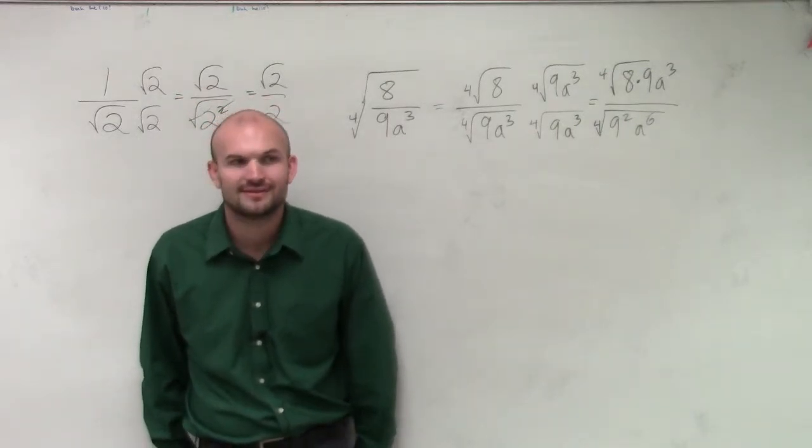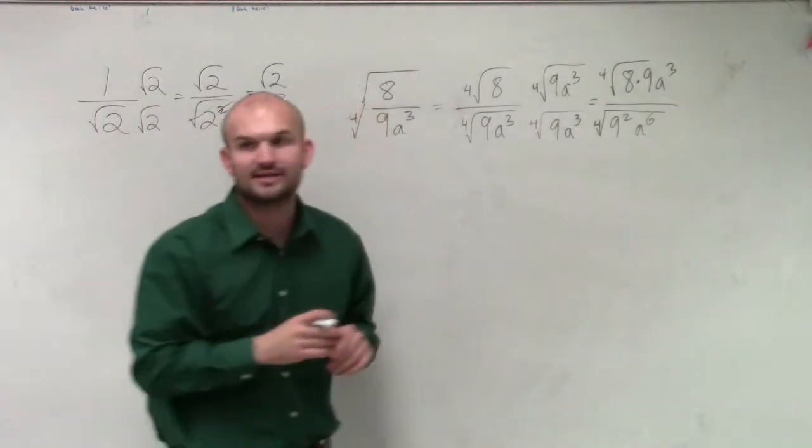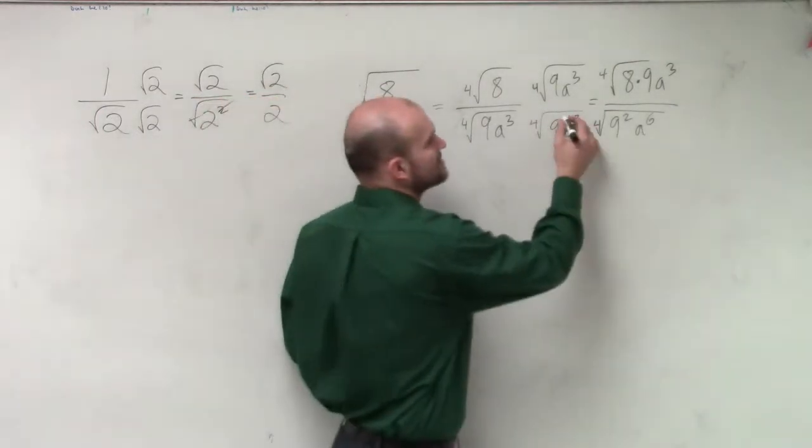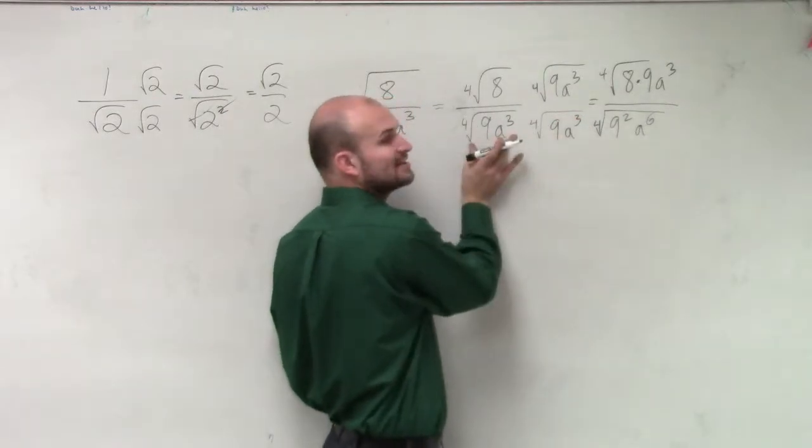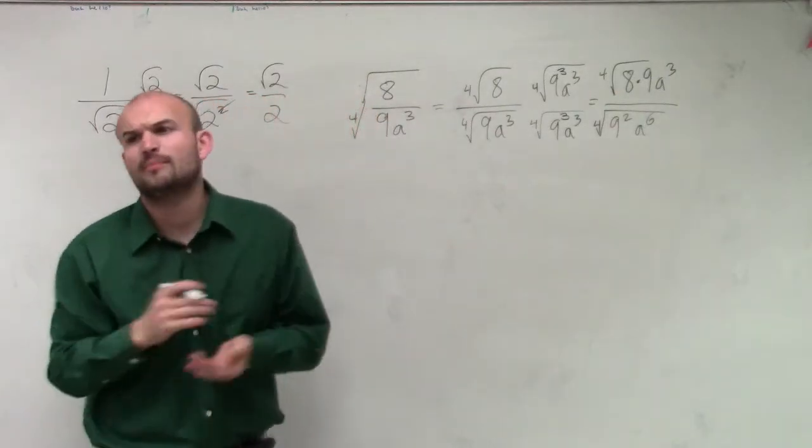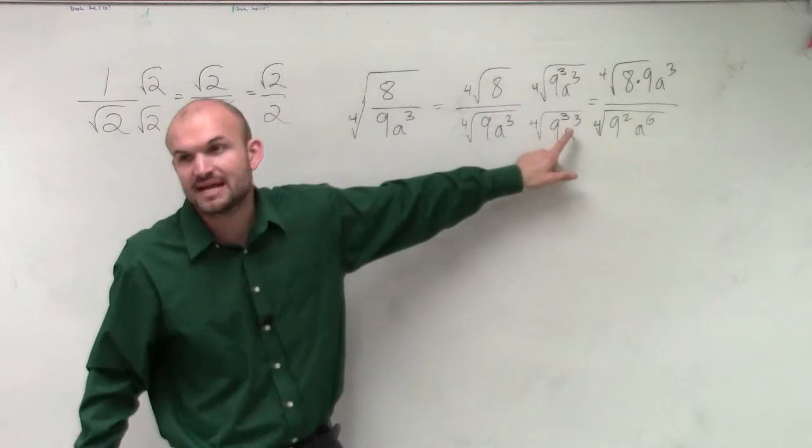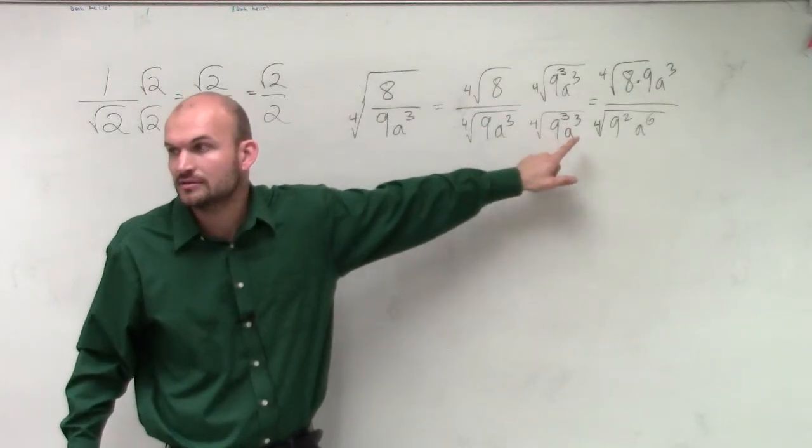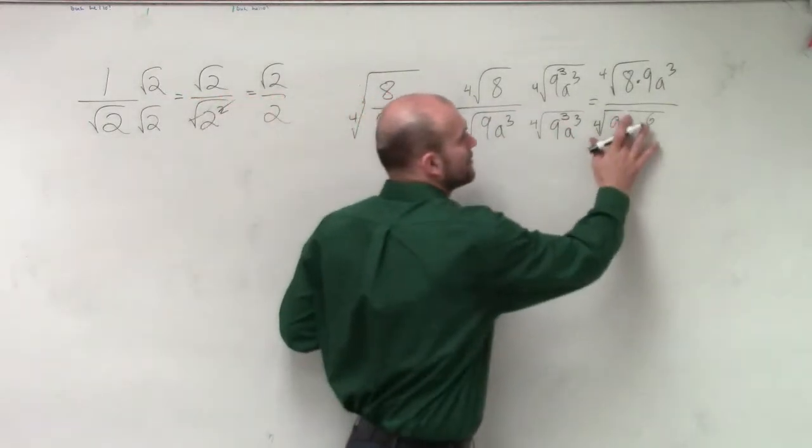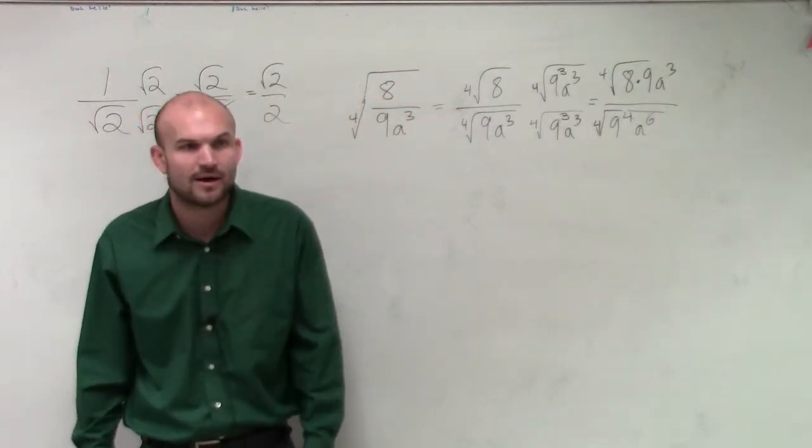So if we already have 9 here, what do I need to multiply this by so it's going to be 9 to the fourth power? How about this? What about, rather than what Japonica said, which makes sense, how about instead of multiplying it by exactly what this is, we multiply it by 9 cubed? Why would you want to multiply it by 9 cubed? Well, let's look at it. What's 9 times 9 cubed? 9 to the fourth power. Can we now simplify the fourth root of 9 to the fourth power? Yes.